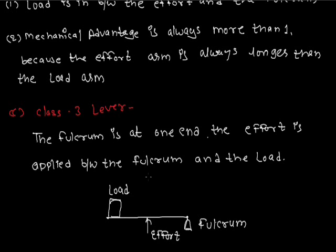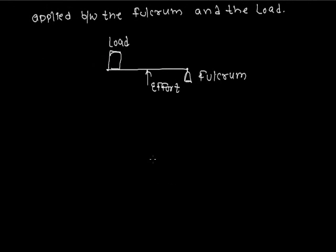Examples of class 3 lever: fishing rod, tennis racket, spade used to lift coal, saw, sugar tongs, knife, broom, fire tongs, hair plucker, honey stick, and many more examples.